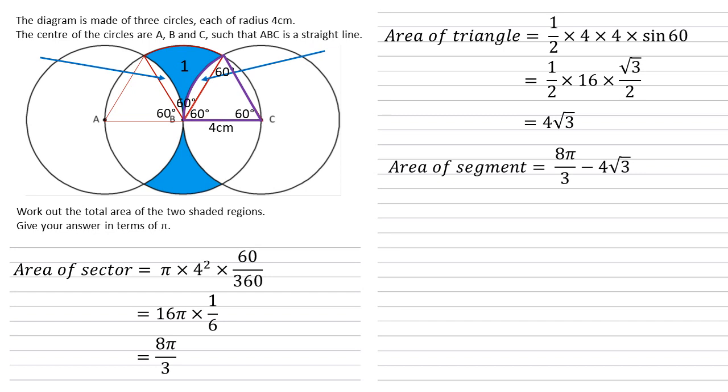So this red sector that we've got here at the top is identical to the purple one. It's got an angle of 60 degrees, it's got two sides of 4 centimeters. So its area is also 8π/3.